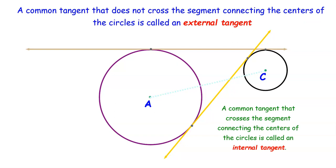The beige line, which does not cross the segment connecting the centers of the circles, is called an external tangent. The yellow line that does cross the segment connecting the centers of the circles, now shown on screen in light blue, is called an internal tangent.